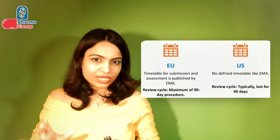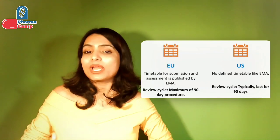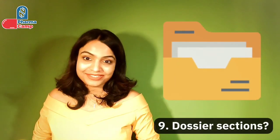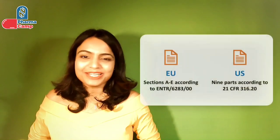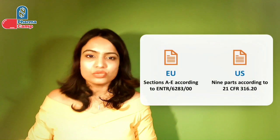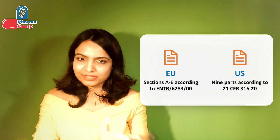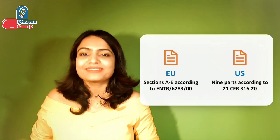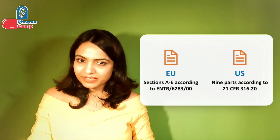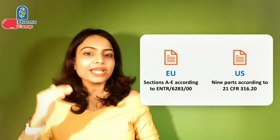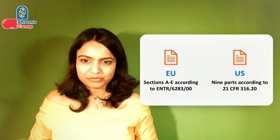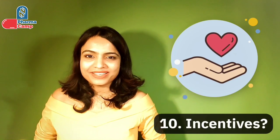The ninth comparison point is the format of the dossier. In the EU, the scientific dossier is prepared in sections A through E according to the EC guideline. In the US, the scientific dossier is prepared in line with 21 CFR 316.20 in nine parts.